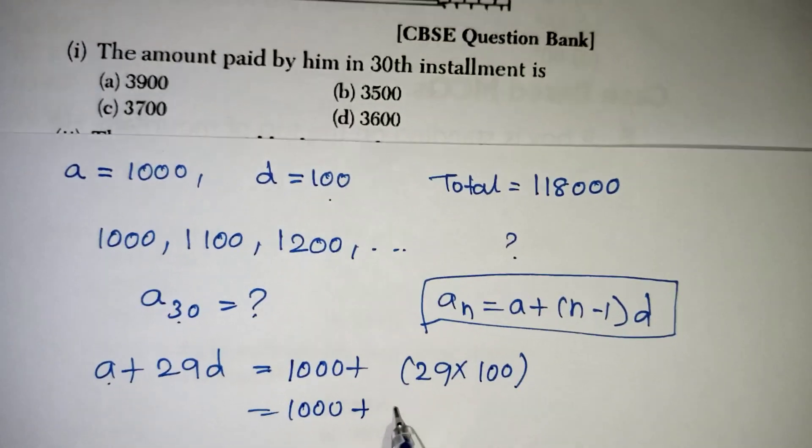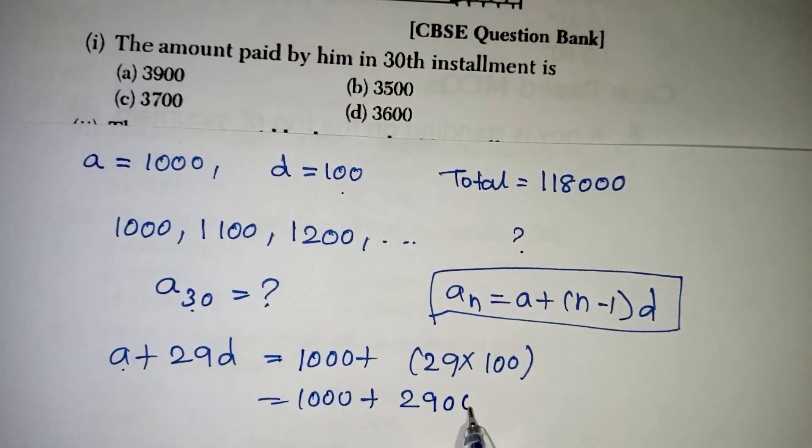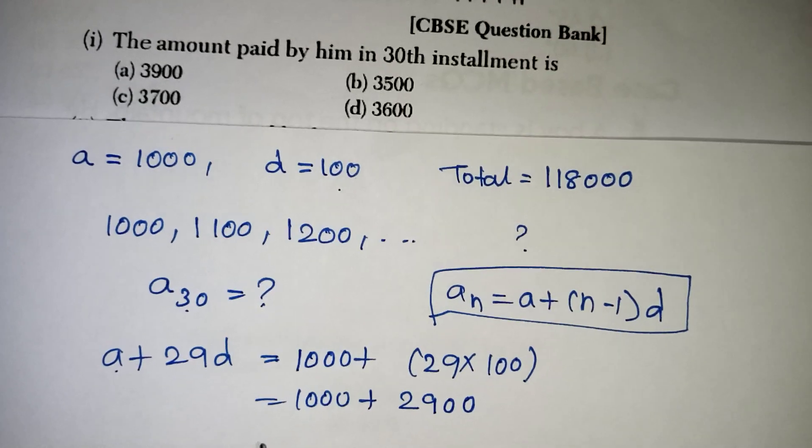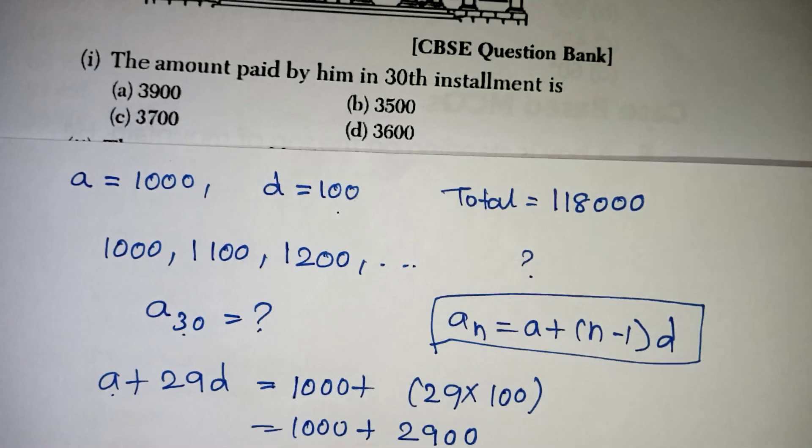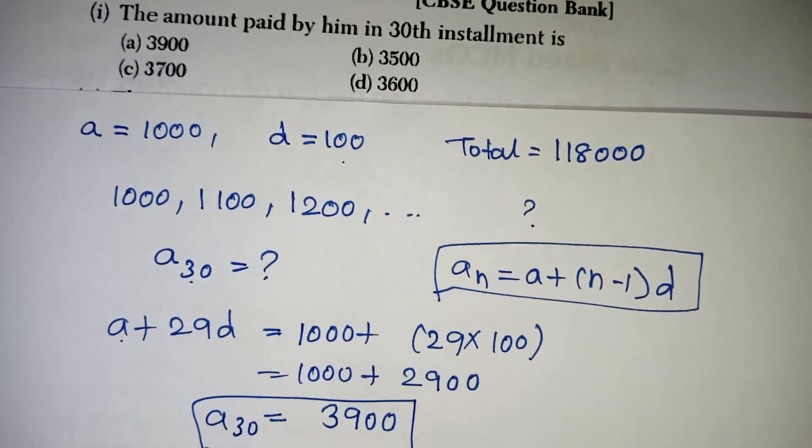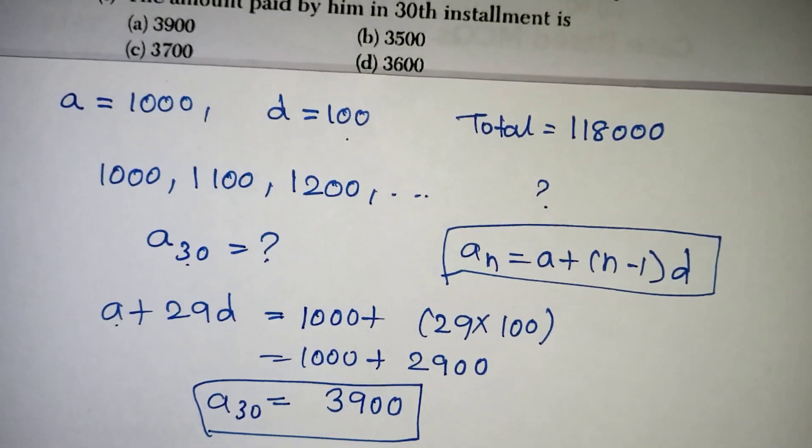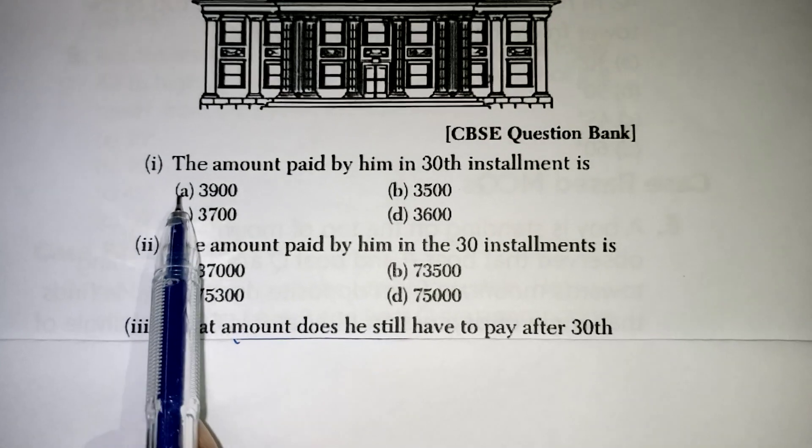So, 1000 plus 2900 we can write it. 2900 plus 1000 will be 3900. So, this is amount should be paid in the 30th installment. So, 3900 is your correct answer. So, first answer is the correct one.